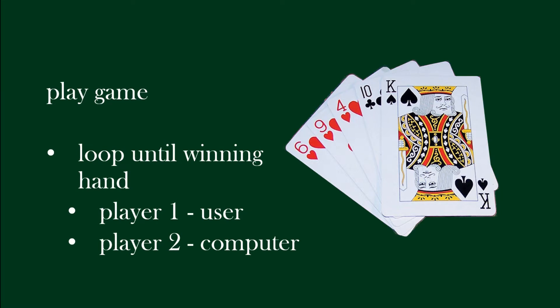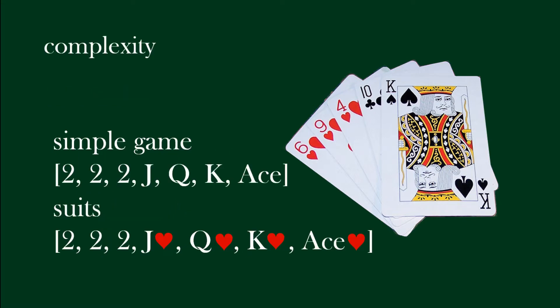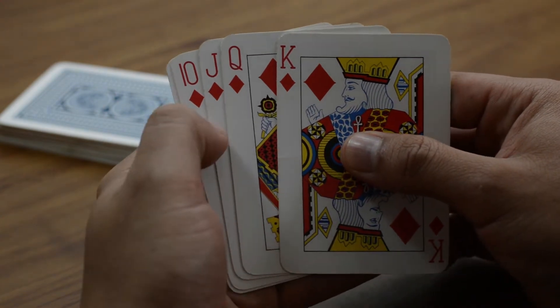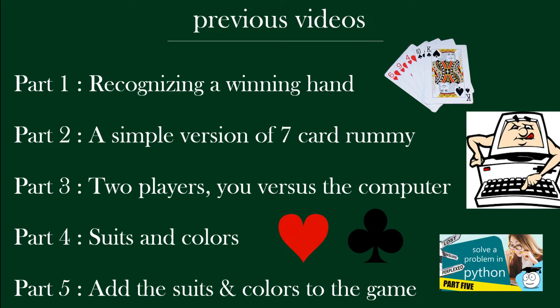In the game we have two players — the first player is the user, the second is the computer. We started with a simple game using just numbers and face cards, then made it more complex by adding suits, which is how the proper game is played. Recognizing a winning hand was the first big problem. Then we added player options, the computer player, and suits with colors. Now we want to complete all of the game code.